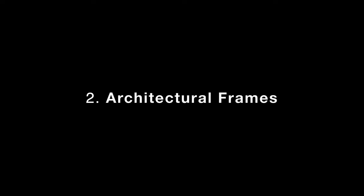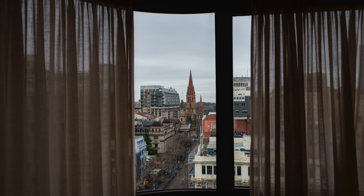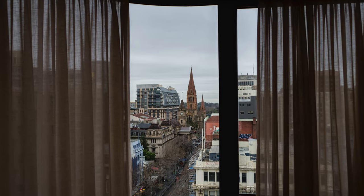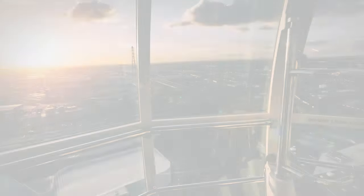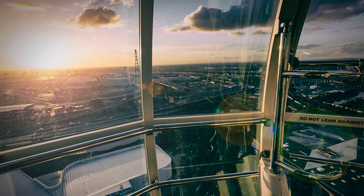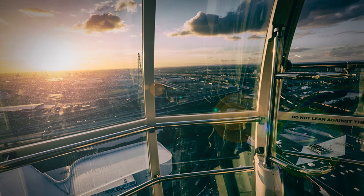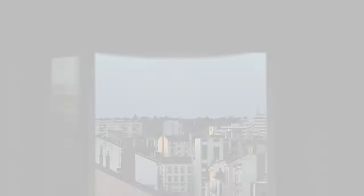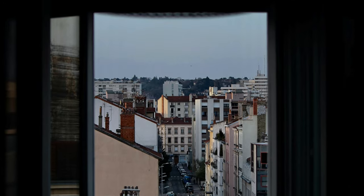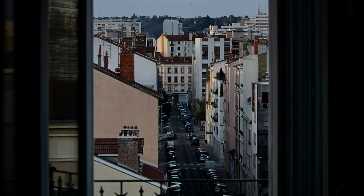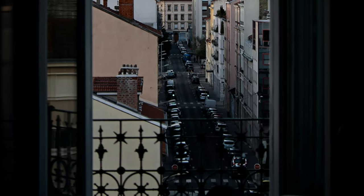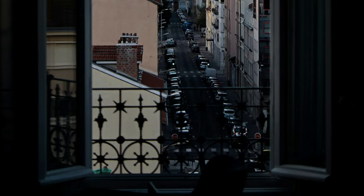Two: Architectural frames. Using doors, windows, arches, and other architectural elements as frames can give your images a structured and balanced look. This technique is especially effective in urban environments where geometric shapes and lines dominate. Example: a picture of a bustling street viewed through an old ornate window frame. The window adds character and historical context, making the street scene more intriguing and layered.